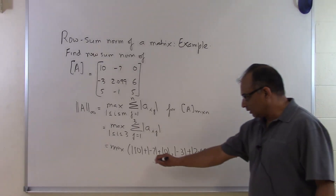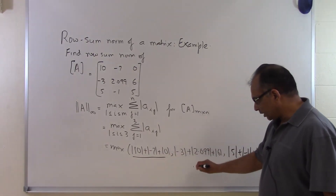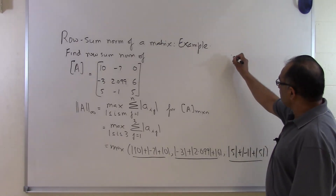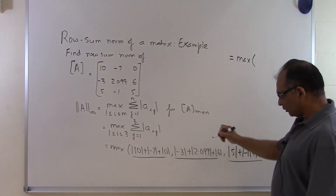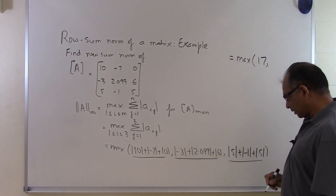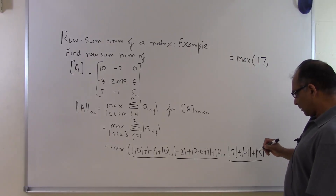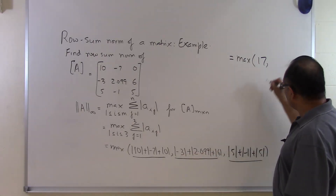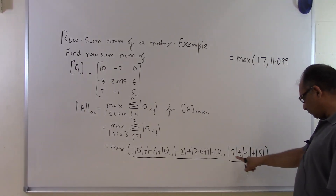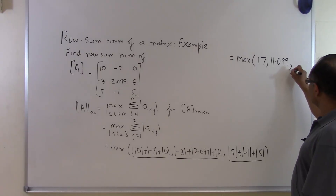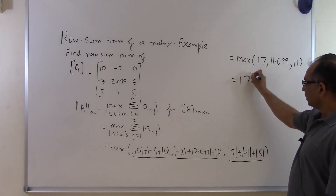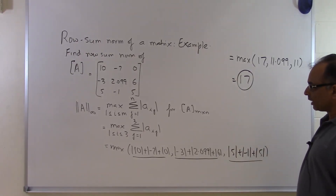Those are the individual summations we are calculating. The first summation will be 17, the next will be 11.099, and the last summation will be 5 plus 1 plus 5 which equals 11. The maximum of these is 17, and that is the row sum norm of that particular matrix.